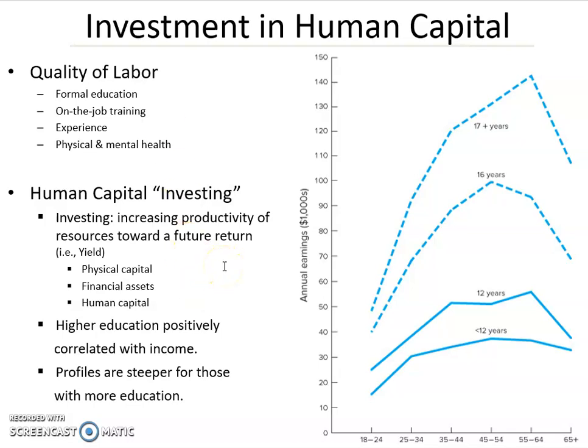Investing increases the productivity of resources towards a future return. You've probably thought of investing in the financial markets, and that's a good proxy for what we're doing here. If you invest in the stock market, you're giving up something today — the money to buy the stock — in order to get a future return, likely dividends or appreciation of that stock long term. We can think of the same thing when we talk about human capital. You invest in your college education; your firm invests in training you because they want a future return, giving up something today to get a stream of future returns. Human capital investing is just an extension of investing in physical capital and financial assets.